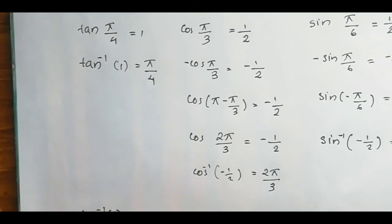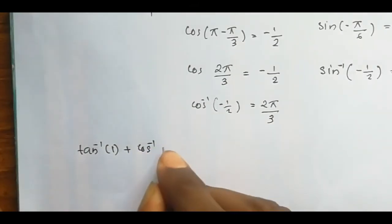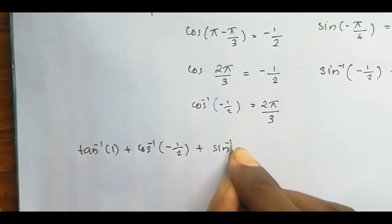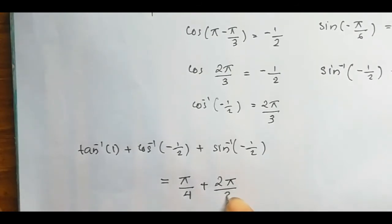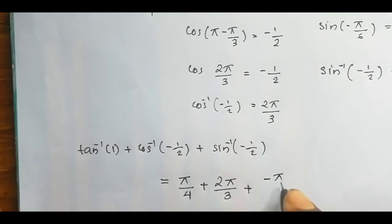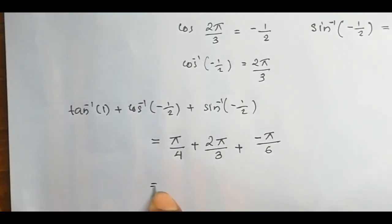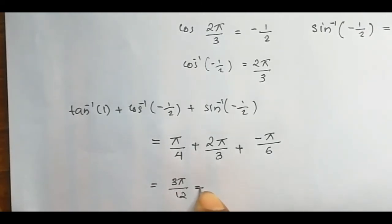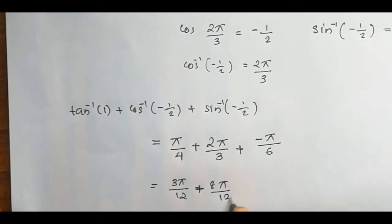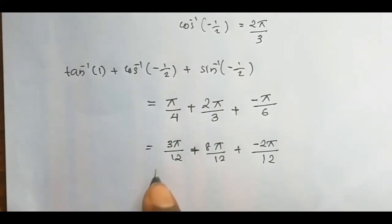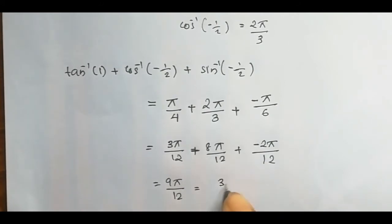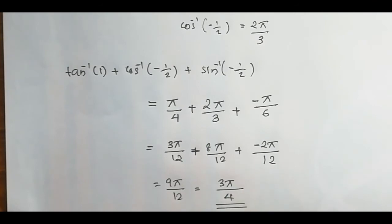Now substituting all values: tan⁻¹(1) + cos⁻¹(-1/2) + sin⁻¹(-1/2) = π/4 + 2π/3 + (-π/6). Taking the common denominator 12: 3π/12 + 8π/12 - 2π/12 = 9π/12 = 3π/4. So the final answer is 3π/4.